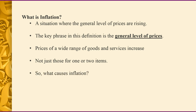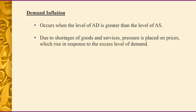What causes inflation? There are two main types, or causes, of inflation. The first is demand inflation. This is inflation caused because aggregate demand goes up. People want more goods, and because they want more goods, there are shortages. Suppliers can't supply all the goods, so prices go up — that's natural.